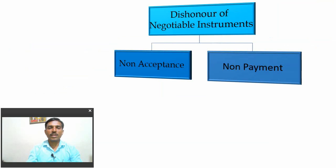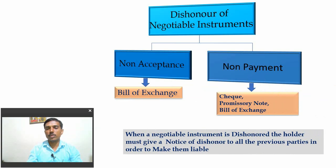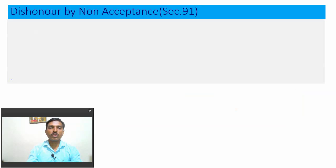There are two main types of Dishonor of Negotiable Instrument: Dishonor by non-acceptance and Dishonor by non-payment. Non-acceptance applies only to the Bill of Exchange, while non-payment applies to the cheque, promissory note, and bill of exchange — meaning all three instruments are included under non-payment. When a negotiable instrument is dishonored, the holder must give a notice of dishonor to all previous parties in order to make them liable.